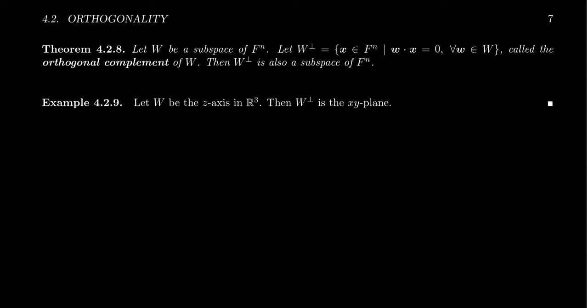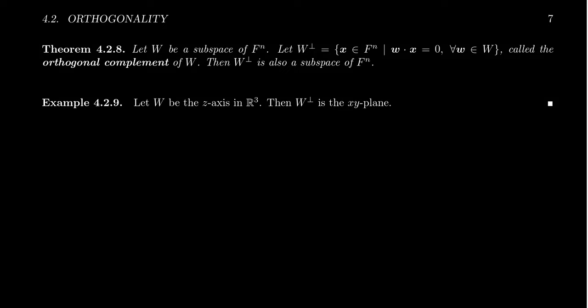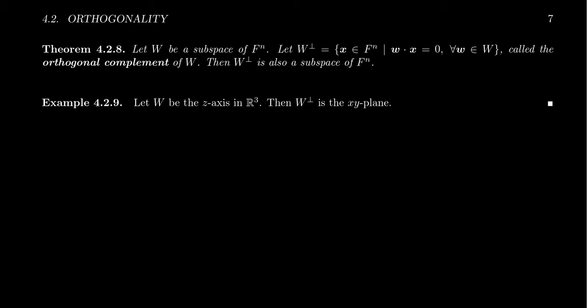In this final video for section 4.2, I want to introduce the notion of an orthogonal complement. Consider we have a subspace W of Fⁿ — W itself is a vector space that lives inside Fⁿ, closed under vector addition, scalar multiplication, and containing the zero vector. Given the subspace W, we define a new set called W perp, or the orthogonal complement. The orthogonal complement is defined to be all vectors in Fⁿ such that when you take the dot product of w and x you get zero — in other words, the set of all vectors orthogonal to vectors in W.